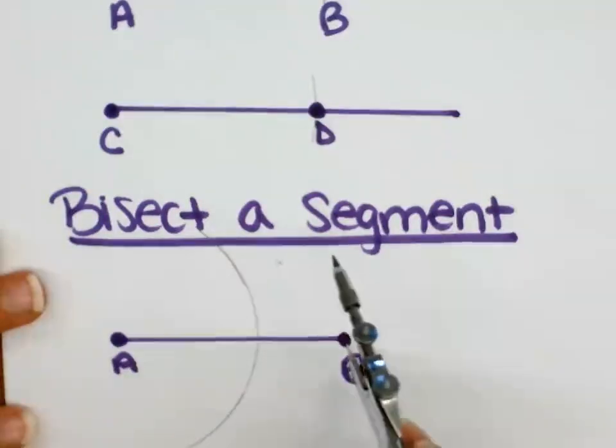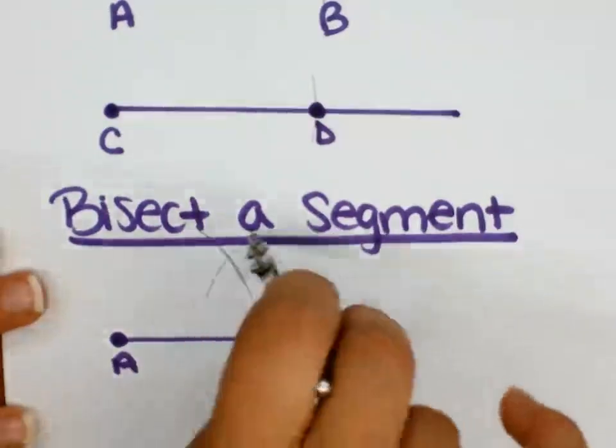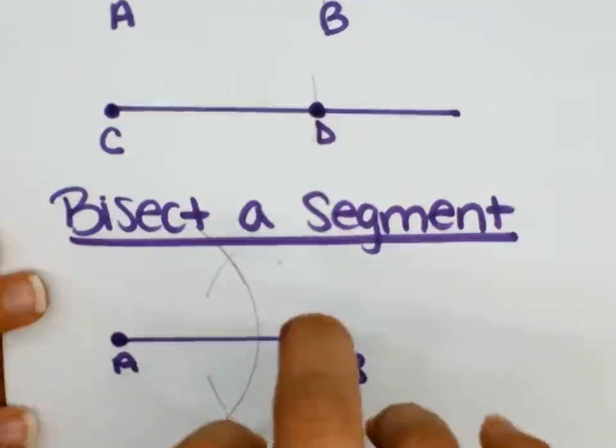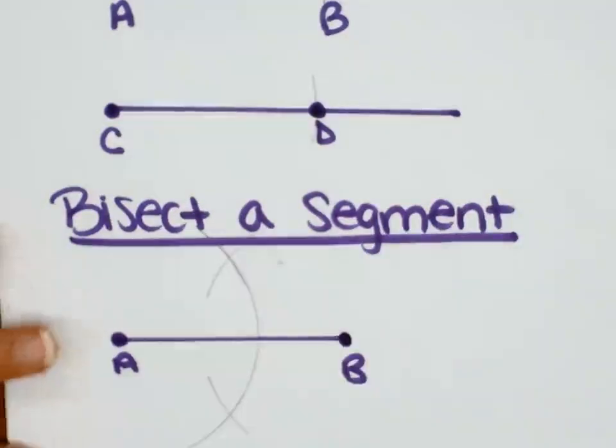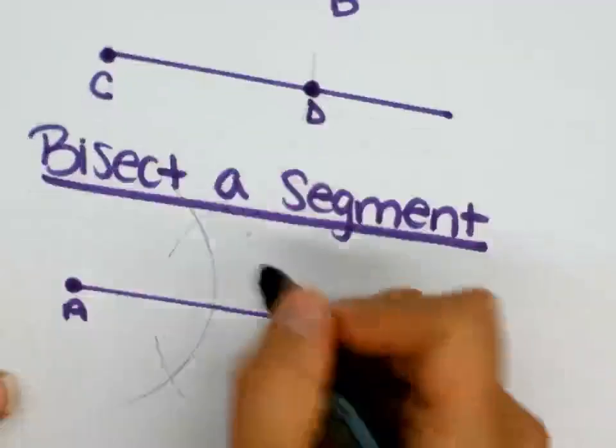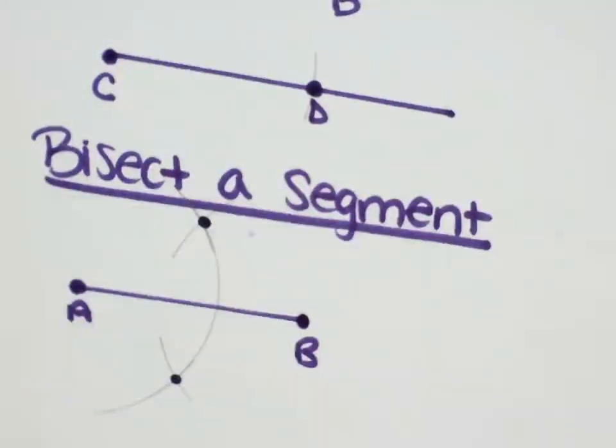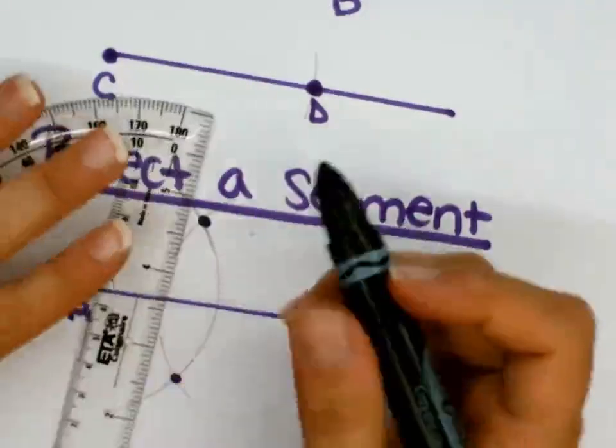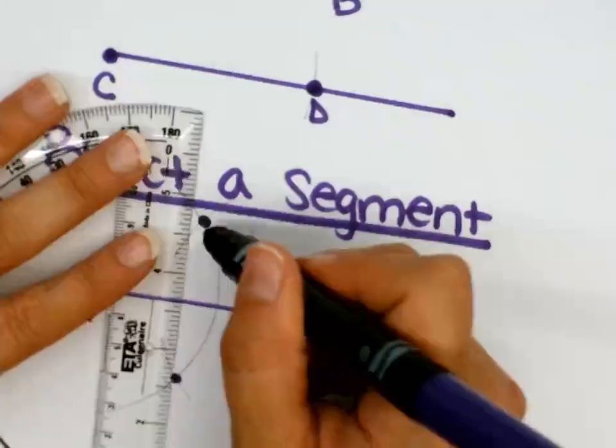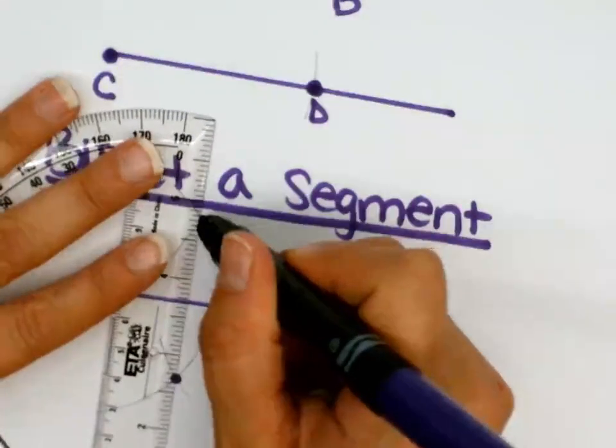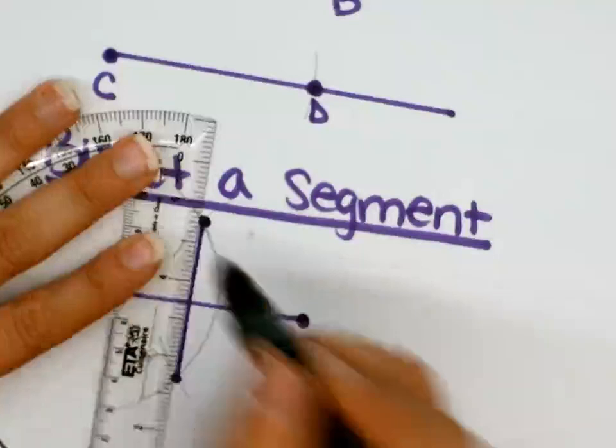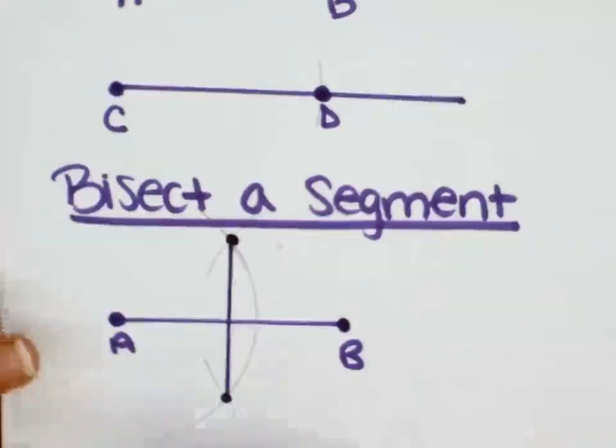Put the sharp part on the B, arc above, arc below, or you can make the full curve. It's personal preference. Mark where those curves intersect. Those arcs intersect. And now you are going to use your straight edge to connect those two points. And this segment is now bisected into two equal parts. This is our midpoint.